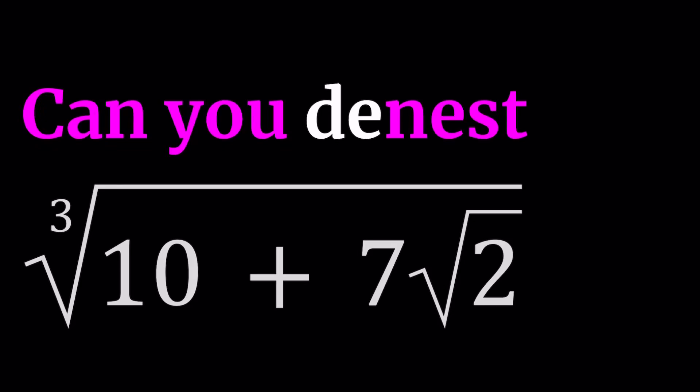Hello everyone. In this video we're going to be denesting a radical. We have the cube root of 10 plus 7√2, and we're going to simplify it — in other words, it's not going to have a radical inside another radical. You can find definitions of denesting on the web, particularly Wikipedia. I'll be presenting two methods.